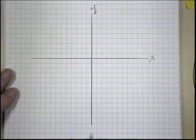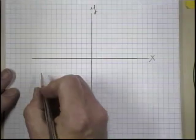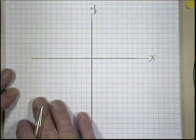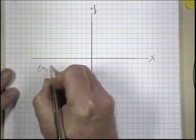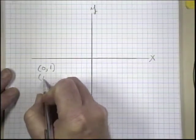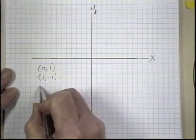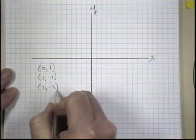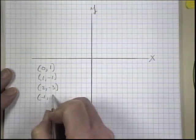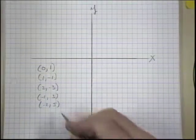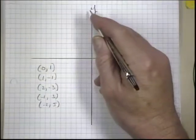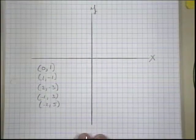And for this problem, just so you can see it, I'm going to write the ordered pairs that I just generated. I'm going to write them down here. They were 0 and 1 and 1 and minus 1 and 2 and minus 3 and minus 1 and 3 and minus 2 and 5.